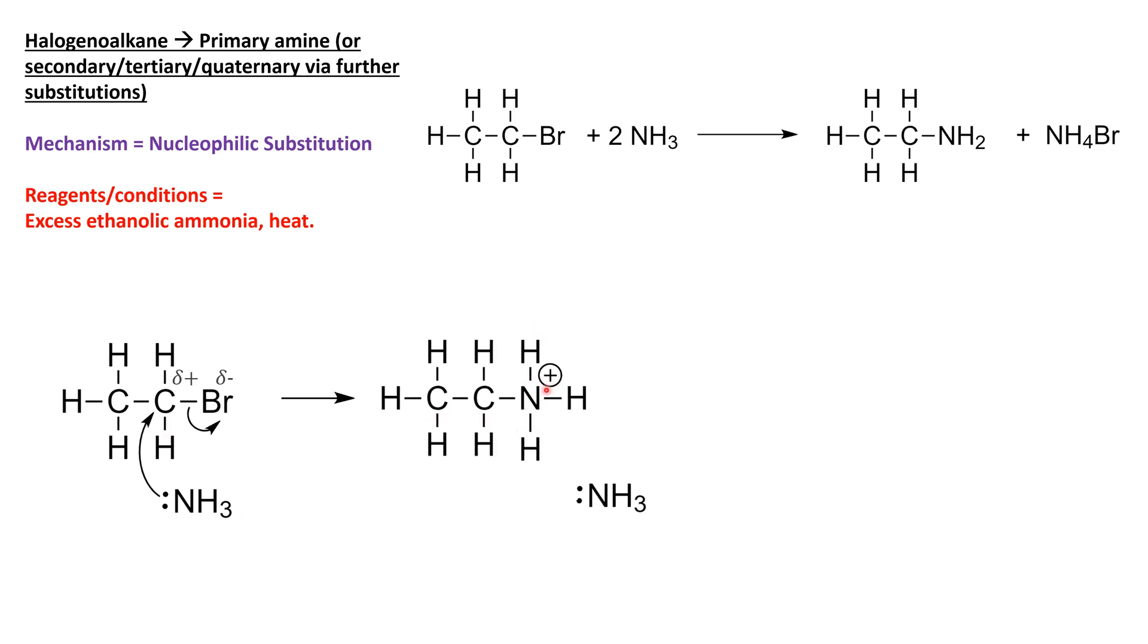Our second mole of ammonia—the excess ammonia—is actually going to act as a base and it's going to get rid of one of those hydrogens so we can end up with this NH2 rather than this NH3. It's going to deprotonate, we call that.